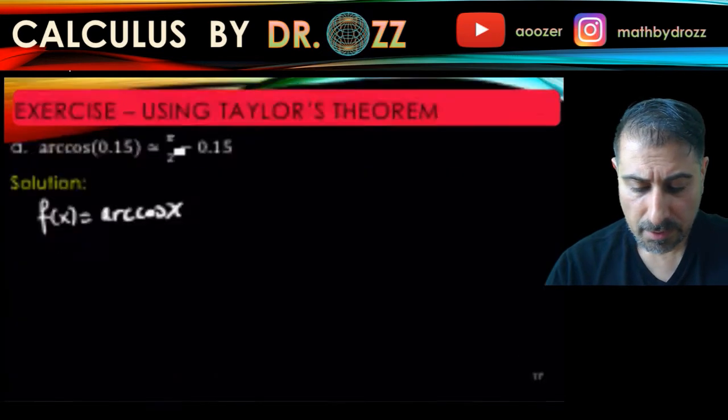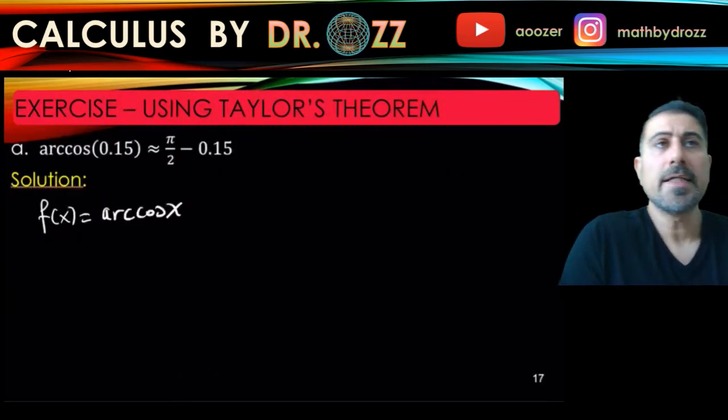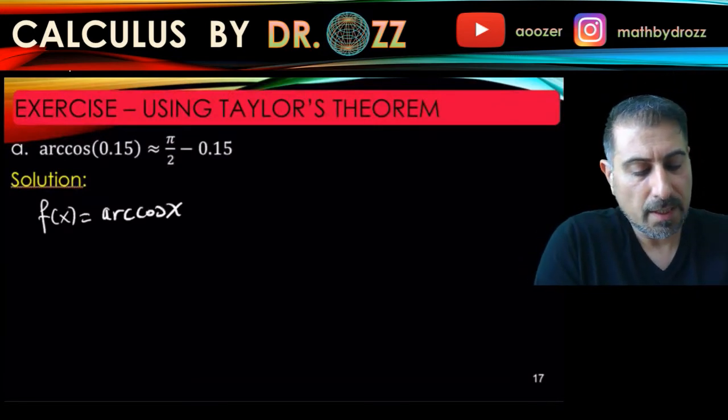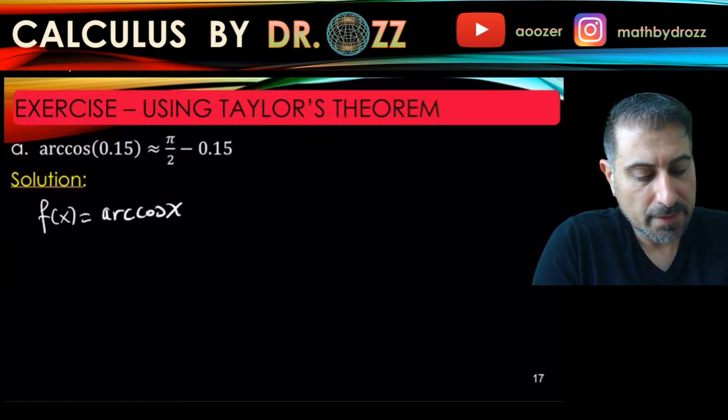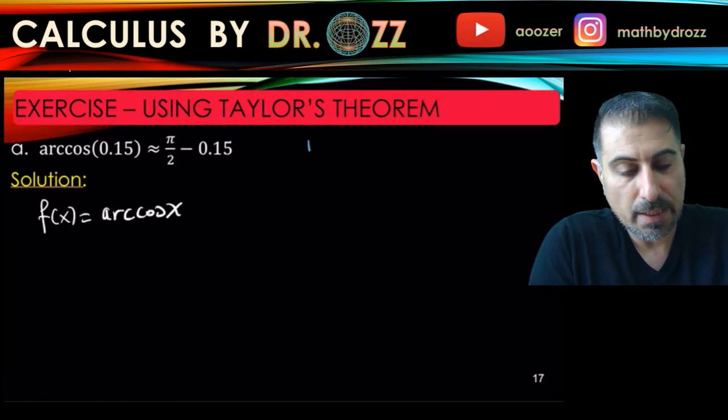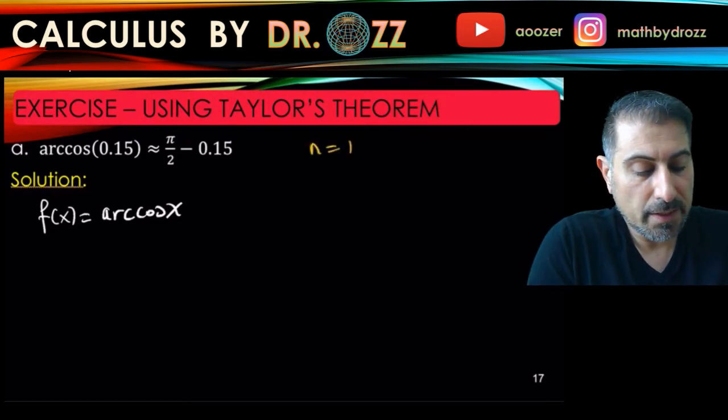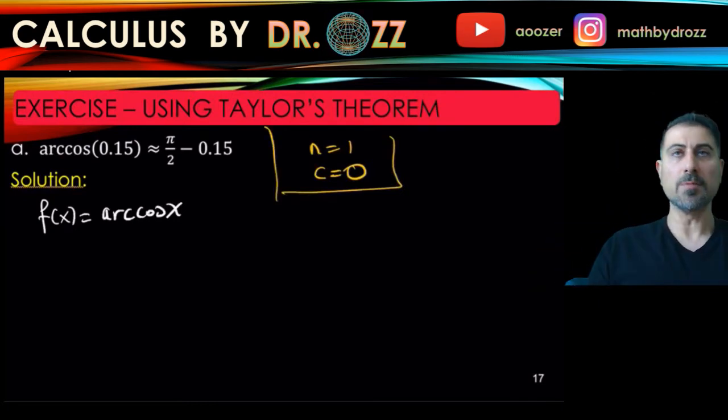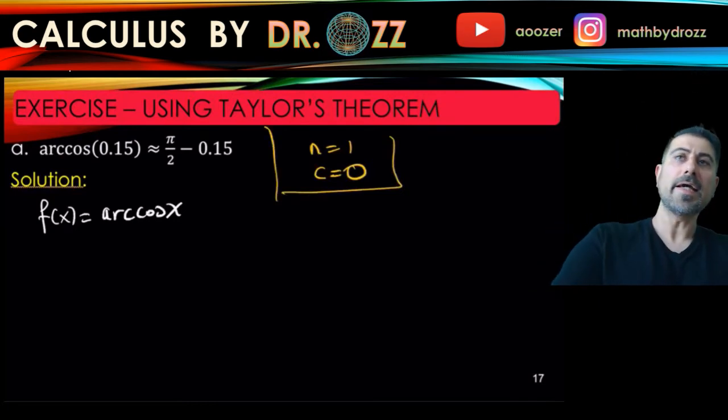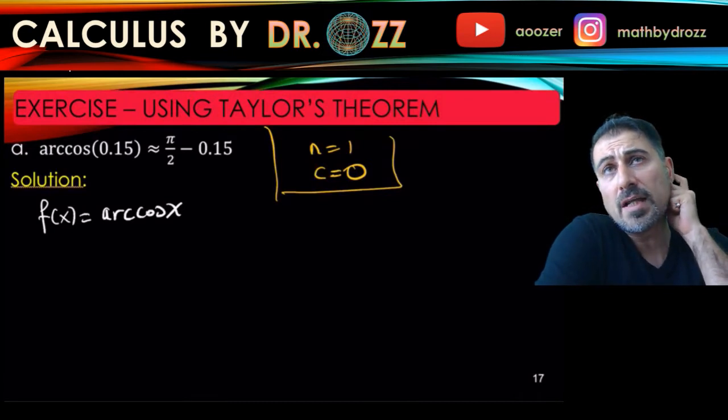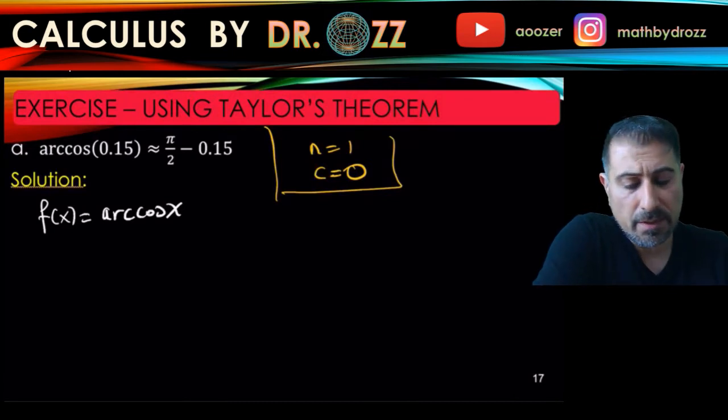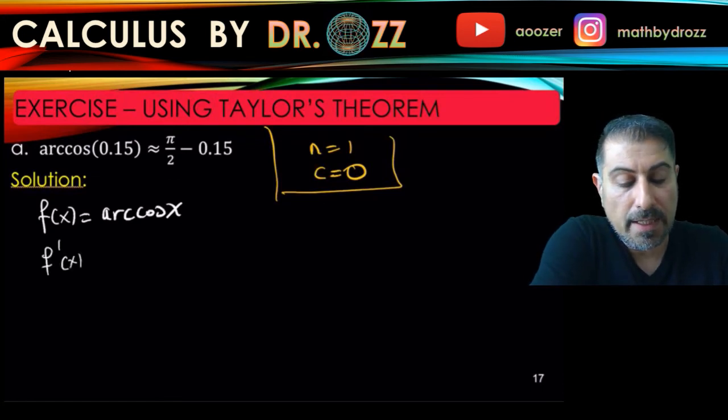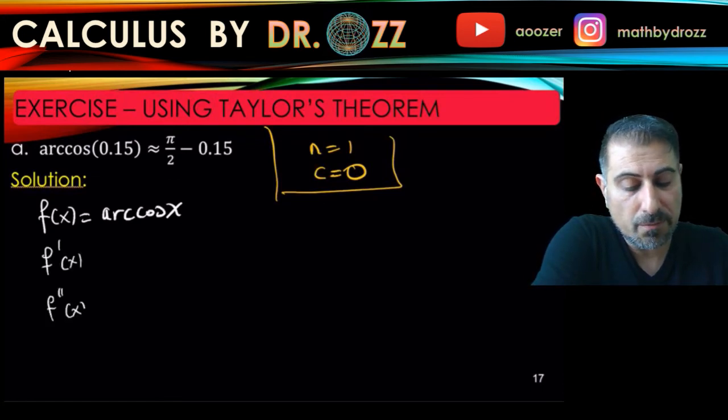So let's go ahead and then write down the Taylor polynomial of f. For the first case I need to write that down for n equals 1 and c equals 0. So essentially it's the Maclaurin polynomial. And then once I have the Maclaurin or Taylor polynomial, then I'm gonna plug in 0.15 in it. So for that reason I need f prime.